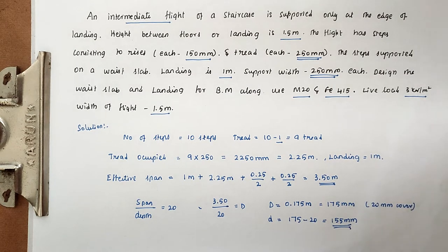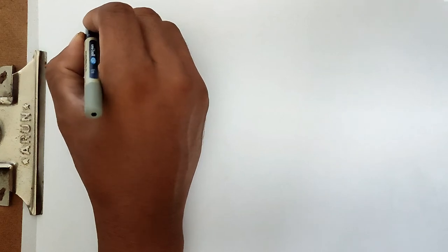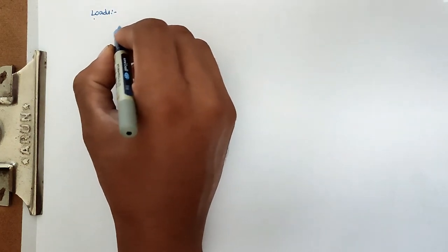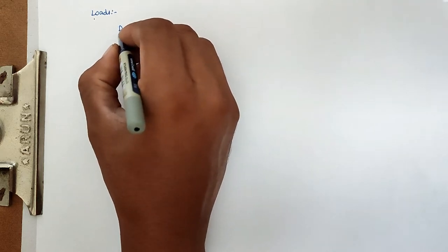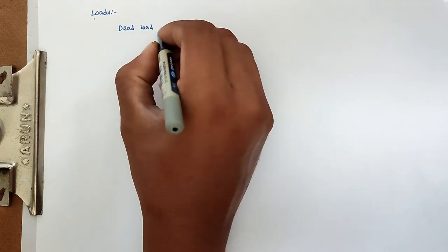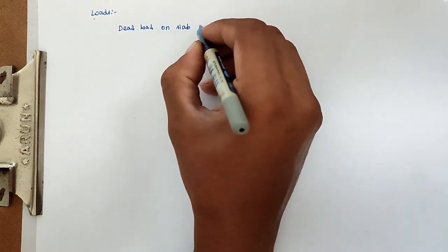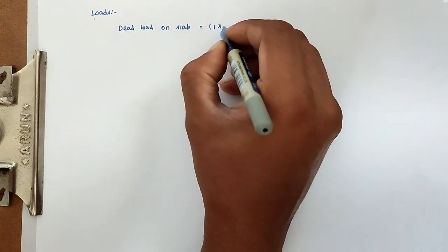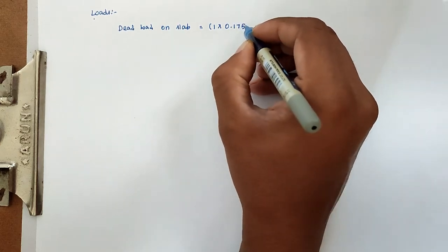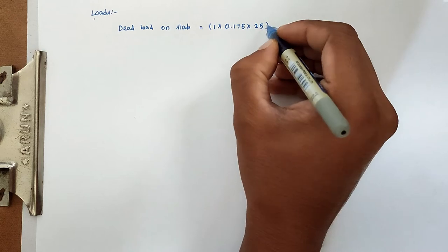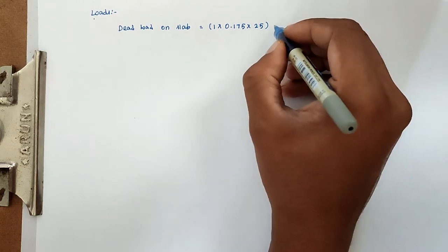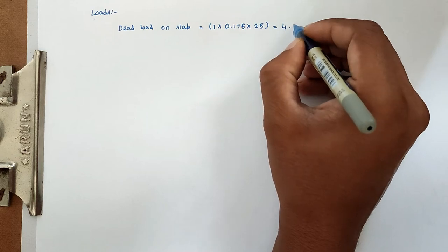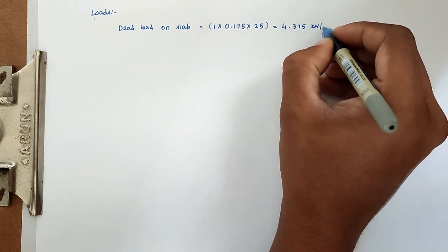Now we calculate loads and moments, then find reinforcement detailing. First we find the dead load. Dead load on slab = 1 × 0.175 × 25 (unit weight of concrete) = 4.375 kN/m. Now we convert this to horizontal load since the slab is inclined.